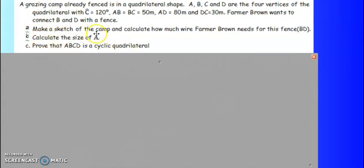Firstly, they ask me to make a sketch of the camp and calculate how much wire Farmer Brown needs for this fence. Now I added in BD, but if I look at the information, even without BD, the question states here for this fence. He wants to connect B and D with the fence, so from there I should know that they are speaking about BD.